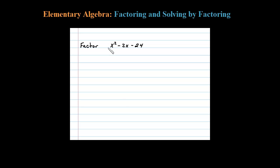Here we're asked to factor a trinomial. Since the leading coefficient is 1, we're looking for the factors of 24 that add up to negative 2. So for 24, we're going to put some thought into it before we start.